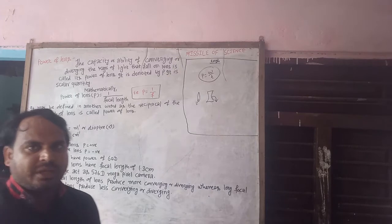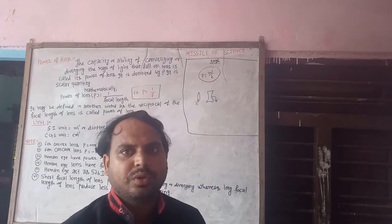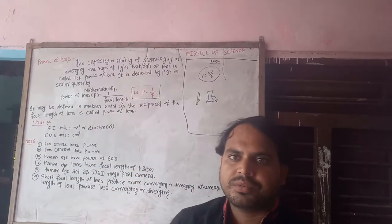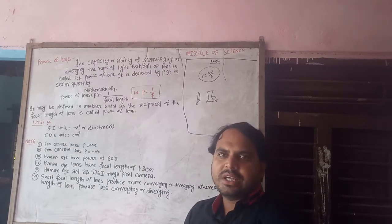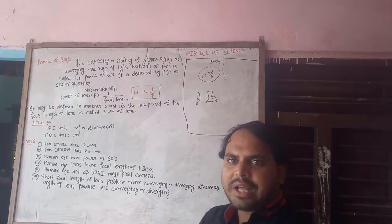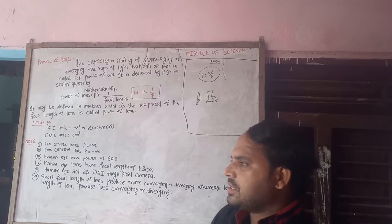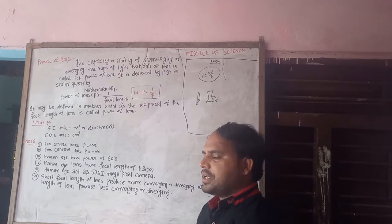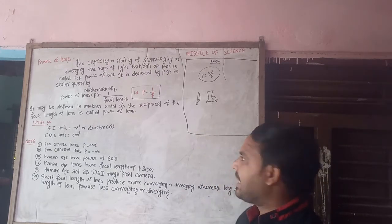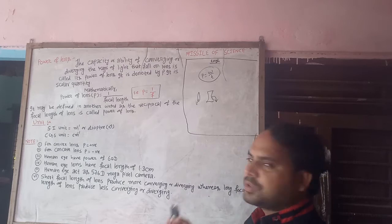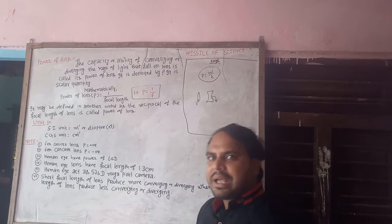So in simple terms, the power of a lens is the ability or the capacity to converge or diverge the ray of light that falls on the lens. When the ray of light falls on the lens, the ray of light will converge or diverge — and that capacity and ability is called the power of the lens.